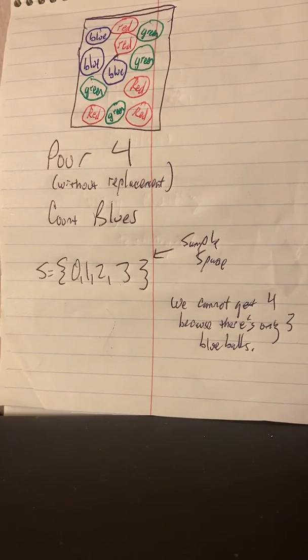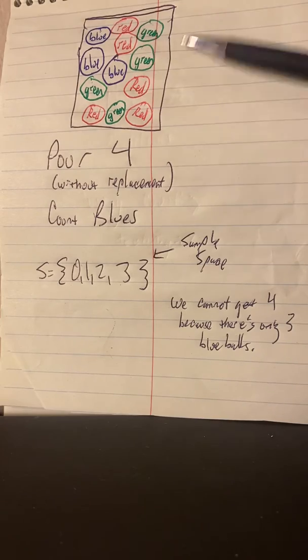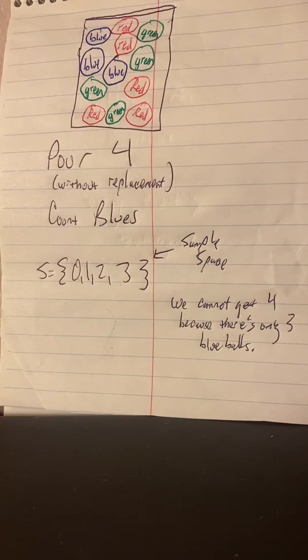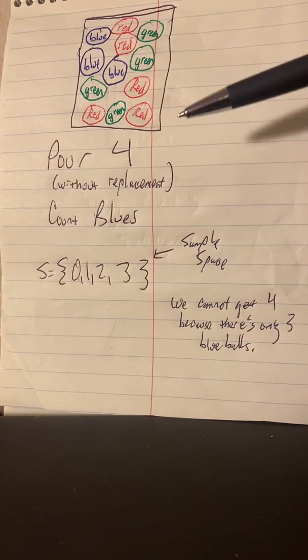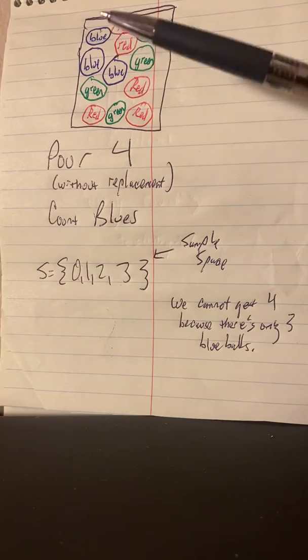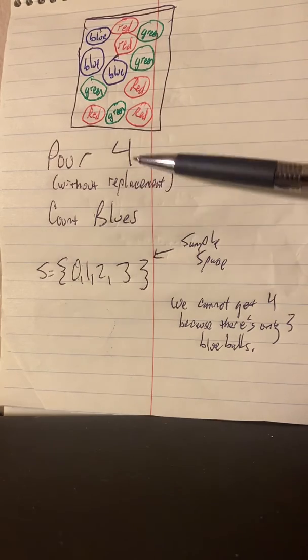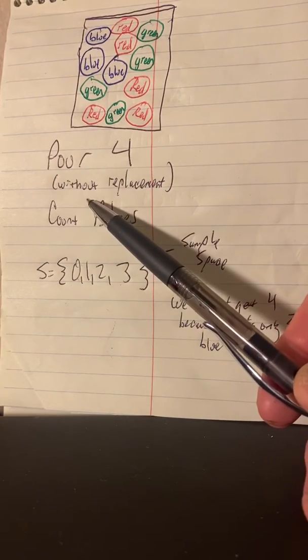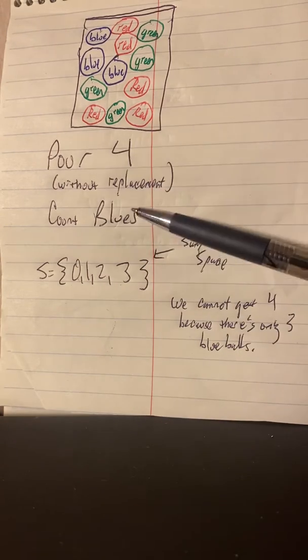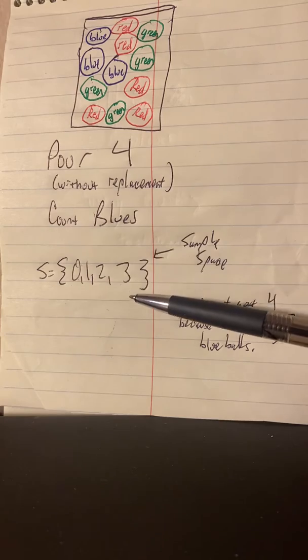Let's consider an experiment where we have a population, an awfully small one. It has 12 members: red, green, and blue. We're going to pour out four of the members, meaning we're sampling without replacement, and we're going to count blues.